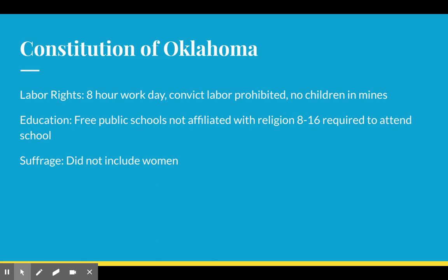Suffrage — the right to vote — did not include women, so not quite as progressive. It also deals with a ton of issues among race and rights of people who are tribal citizens. For African-Americans who live in the new state of Oklahoma, they will have less rights than the white people who live in the state of Oklahoma.